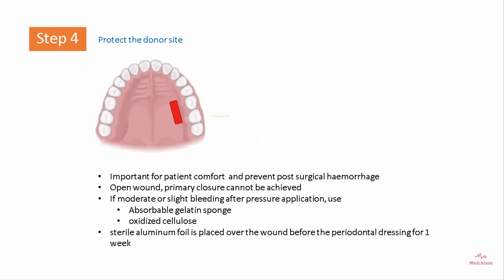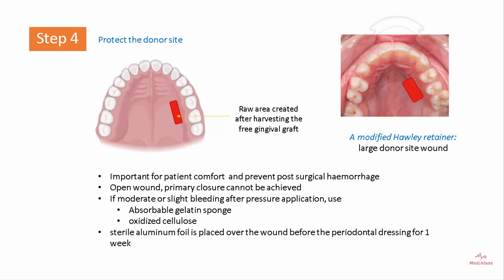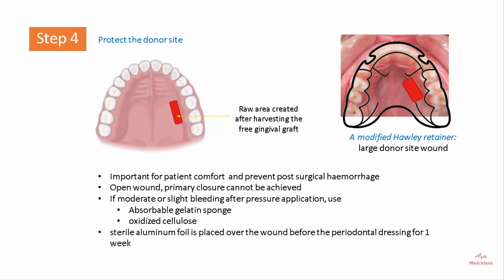Step four involves protection of the donor site, which is important for patient comfort and to prevent post-surgical hemorrhage. The donor site is normally an open wound and primary closure cannot be achieved. For moderate or slight bleeding, pressure application can be done and an absorbable gelatin sponge and oxidized cellulose can be used. A sterile aluminum foil is placed over the wound before a periodontal dressing is applied for one week. If the donor site wound is large, a modified Hawley's retainer can be applied to protect the wound.